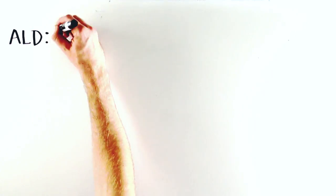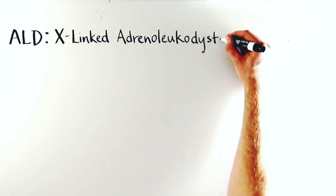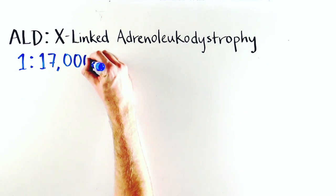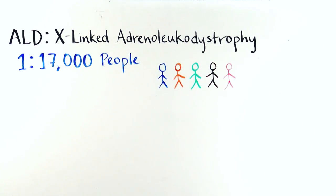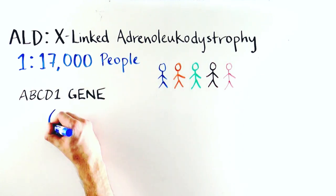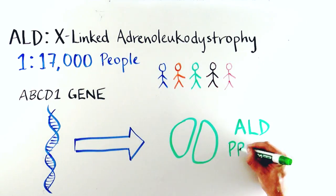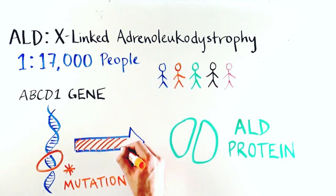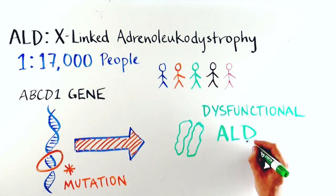Today we're going to focus on ALD, which stands for X-linked adrenoleukodystrophy. ALD affects 1 in 17,000 people of all ethnic backgrounds. This disease is caused by a mutation in the ABCD1 gene that produces the ALD protein. Mutations in the ABCD1 gene prevent the production of a functional ALD protein.